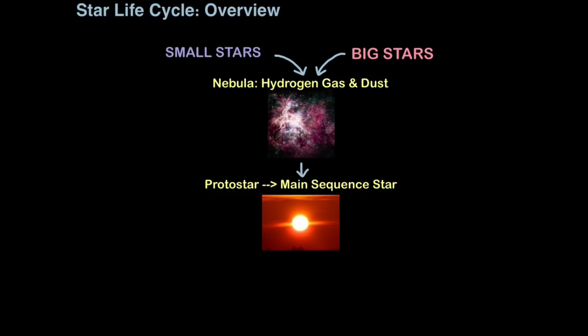Once nuclear fusion has occurred you get a protostar which will then evolve into a main sequence star. Our sun, which by the way is a small or medium-small star, is currently in its main sequence star stage. This stage makes up the bulk of a star's life cycle and it's definitely the most stable stage of a star's life cycle.